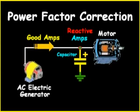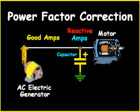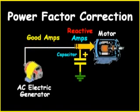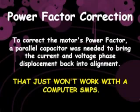To stop the reactive amps from flowing in the electrical wires, a capacitor is placed in parallel with the motor. The reactive amps now flow back and forth between the capacitor and the motor. This resonance prevents reactive amps from flowing in the connecting electrical wires. To correct the motor's power factor, a parallel capacitor was needed to bring the current and voltage phase displacement back into alignment.